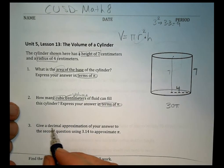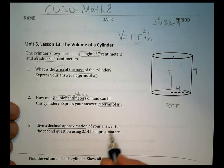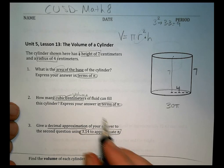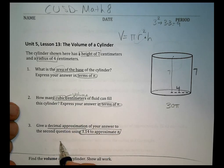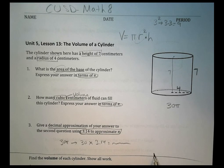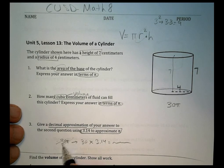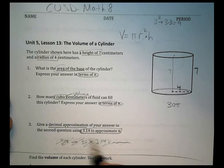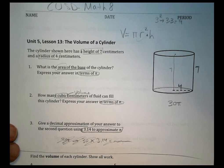And then it says give a decimal approximation of your answer to the second question using 3.14 to approximate pi. So we're going to take your answer here, let's say it was 30 pi, which it's not, then we're going to turn that into 30 times 3.14 to get whatever the approximation is going to be. Now again, it's not 30 pi, so don't use that, that's just an example. So make sure you work that out, and see what you get there.